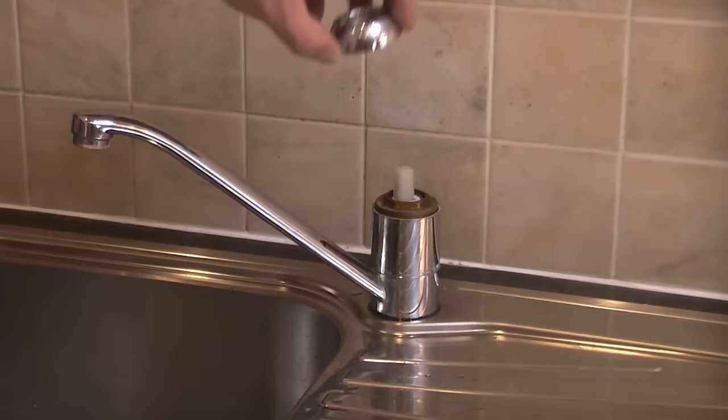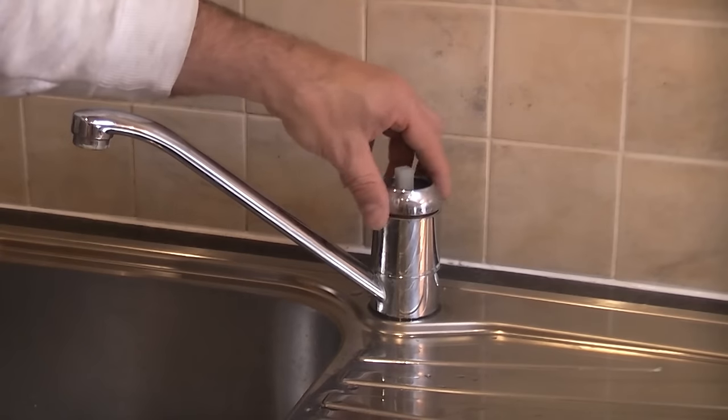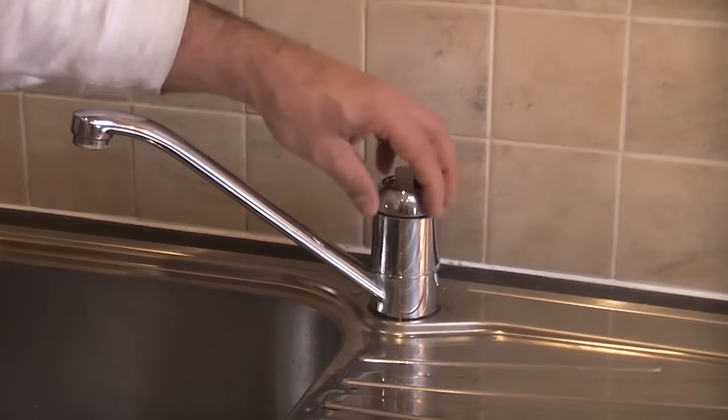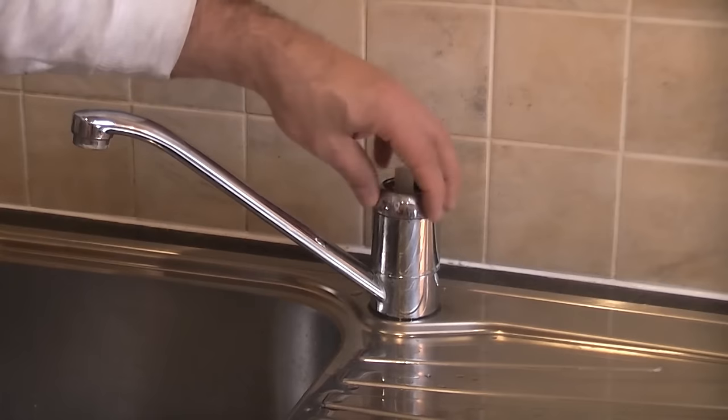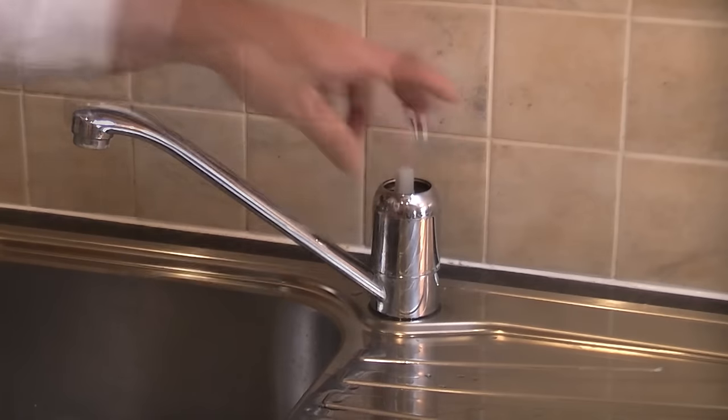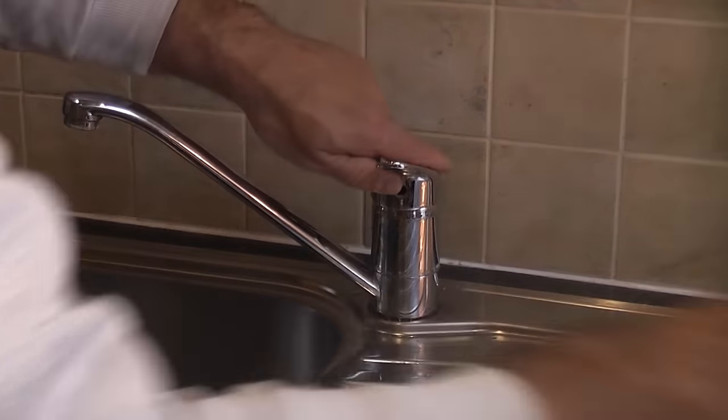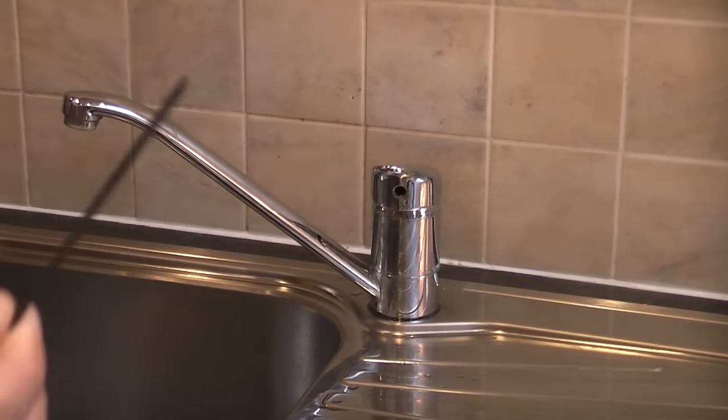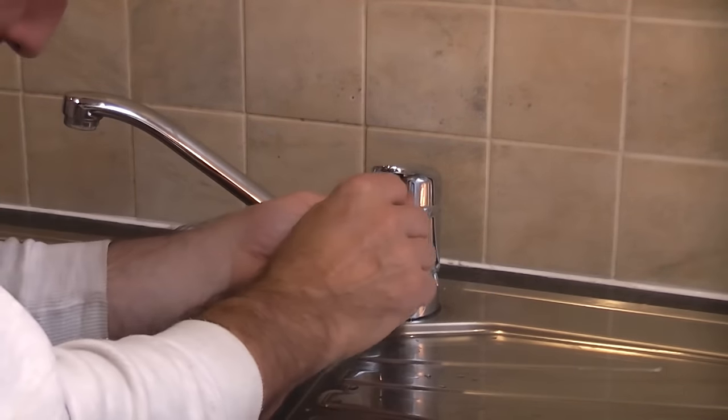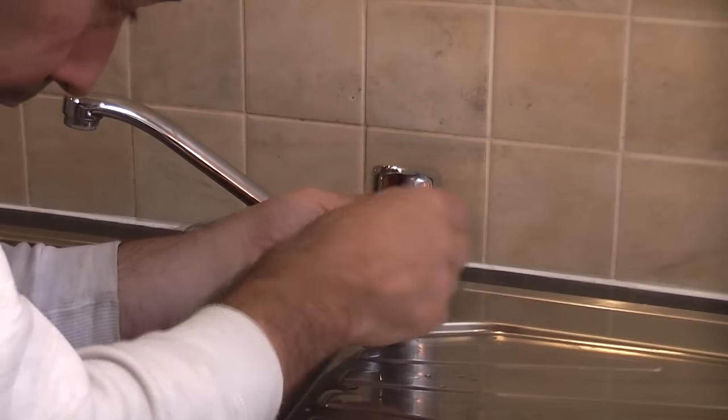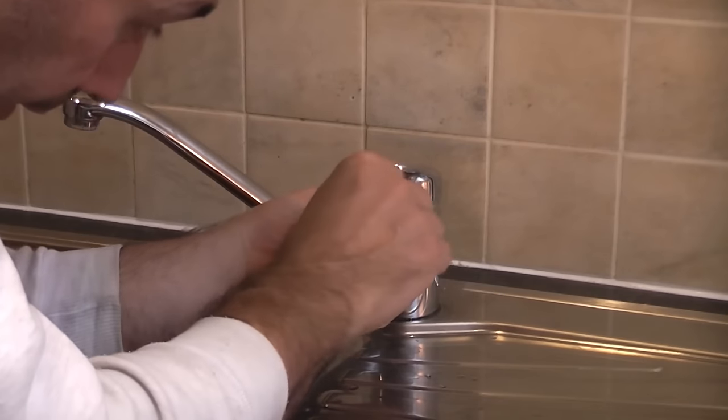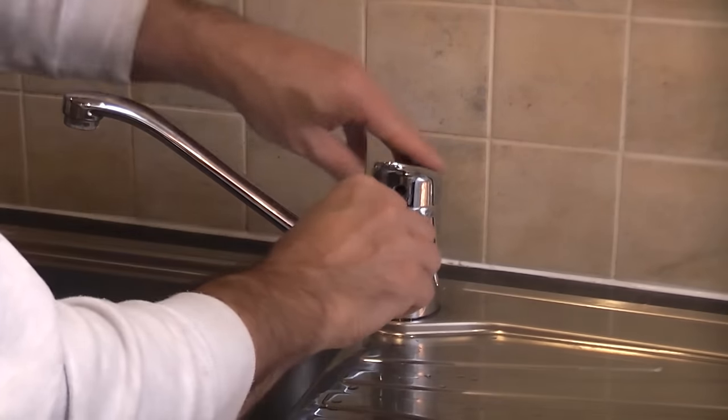So it's now simply a case of screwing back on the shroud. Then we just need to put the handle back on and then we can just use the allen key that we used before. Put that in there and then we can just tighten that back up.